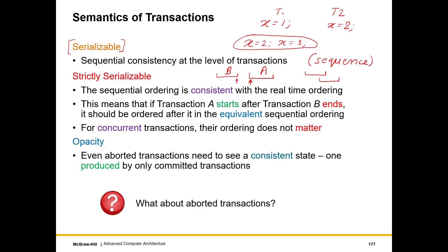Now we come to opacity, which is tricky but in a large number of cases is actually required. We have only talked about committed transactions so far and have said nothing about aborted transactions. Do aborted transactions need to see a consistent state?